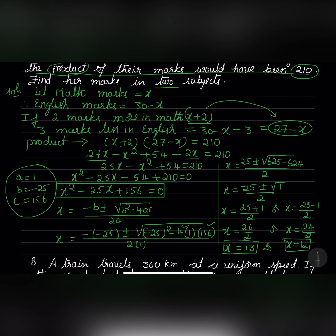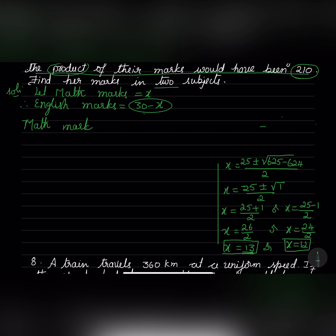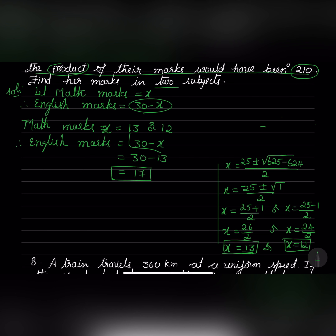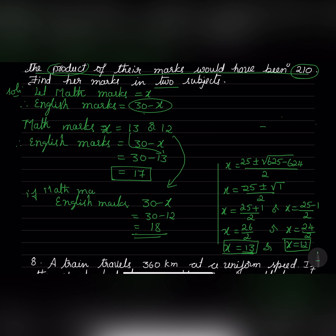So mathematics marks is 13 or 12. If mathematics marks is 13, then English marks equals 30 minus 13 equals 17. If mathematics marks is 12, then English marks equals 30 minus 12 equals 18. So the two possible answers are math marks 13 and English marks 17, or math marks 12 and English marks 18.